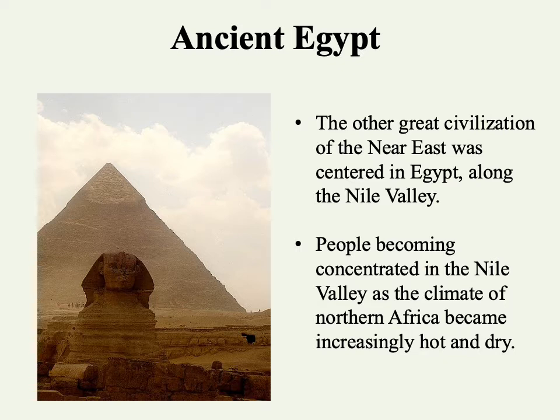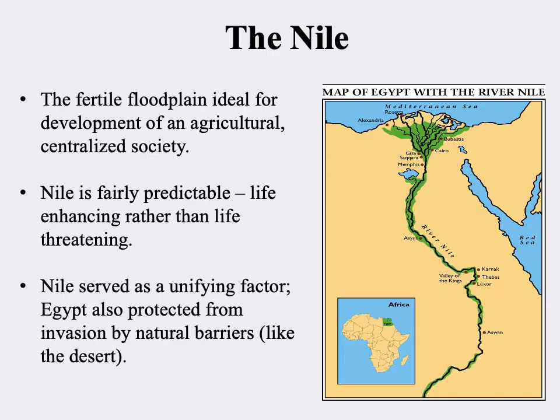It might surprise some people to know that the Sahara Desert was once not a desert. In the period leading up to Egyptian civilization, we start to see desertification of that area, and people conglomerating around this fertile strip running through the desert in Egypt around the Nile River.